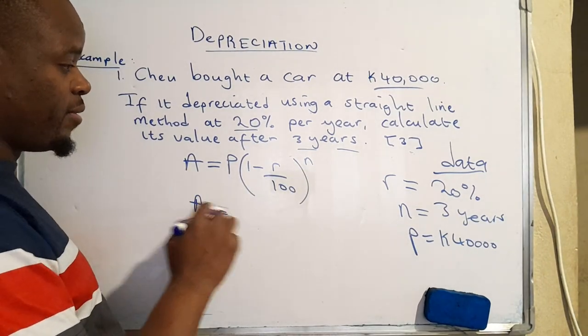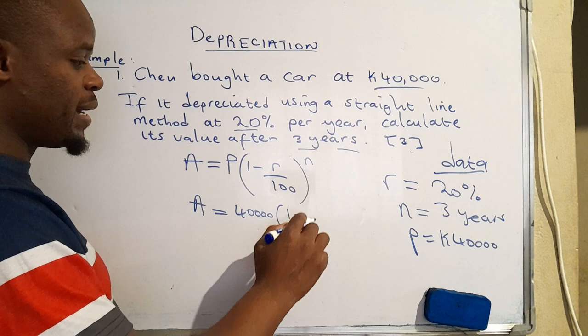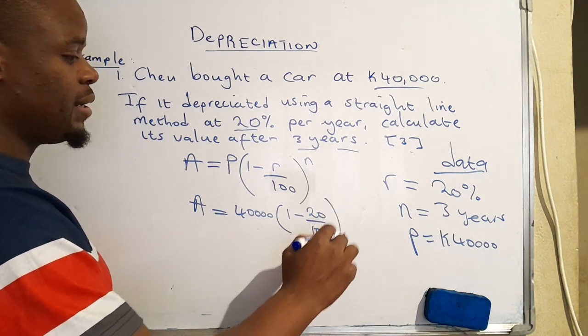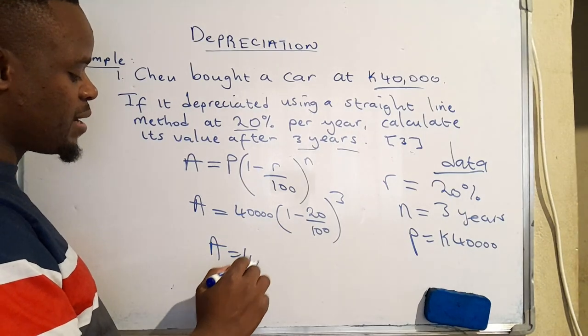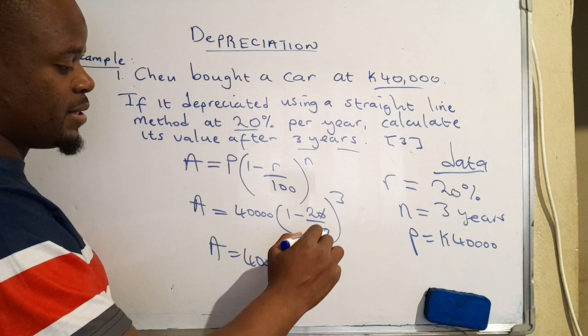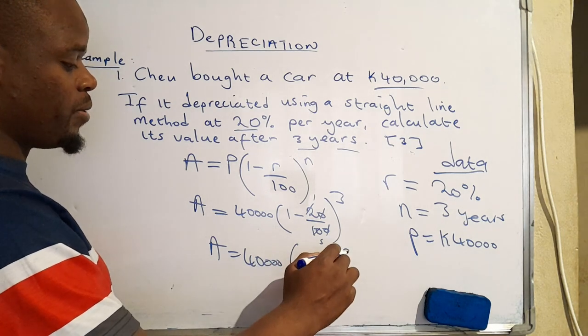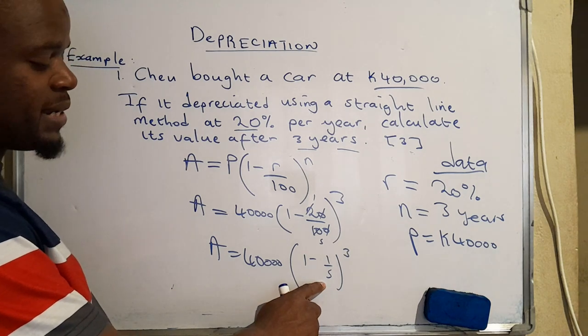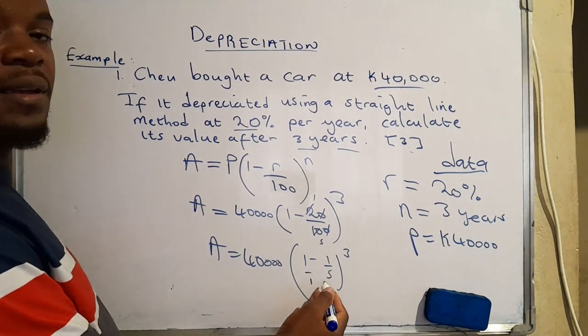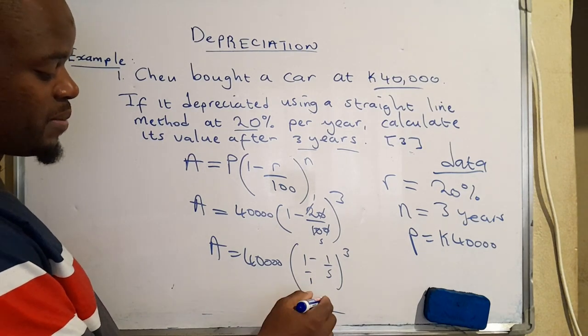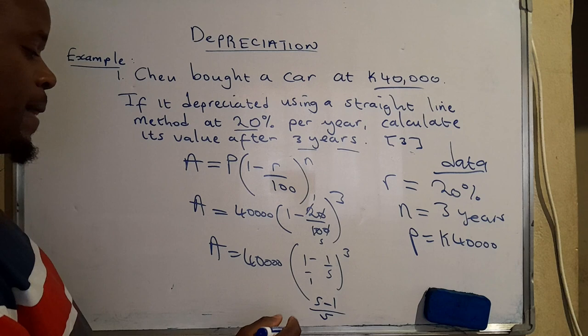Now with those things in place and the formula here, we can simply plug in the values. We say the value of the car will be initial value which is 40,000, one minus the rate which is 20 over 100, raised to the power 3 which is the number of years. We can simplify what is on the inside of the brackets to say 40,000, then 0.2, that's 1/5. So we're going to have 1 minus 1/5 raised to the power 3. We have to simplify this. We write it as a single fraction. The lowest common multiple of 1 and 5 which are the denominators is 5. So 1 times 5 is 5, minus 1 is 4 over 5.